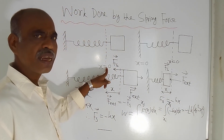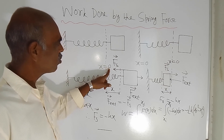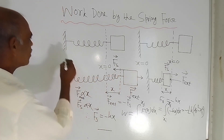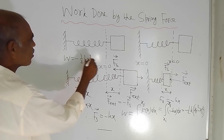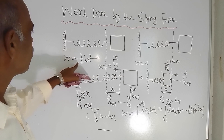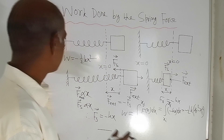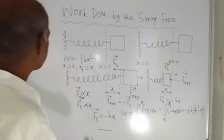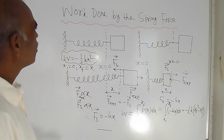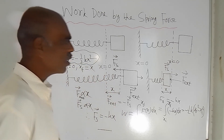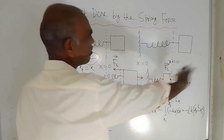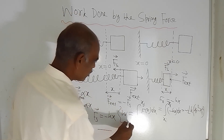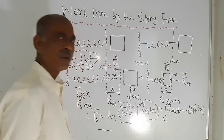In this particular case, Xi = 0 and Xf = X. Then the result becomes W = −½kX². This is the work done by the spring force when starting from the relaxed position. This formula is valid for both expansion and compression.